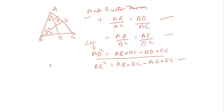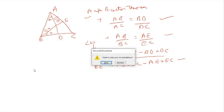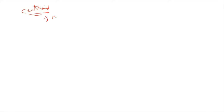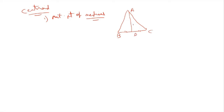Coming to the next important center — the centroid. The centroid is the meeting point of medians. A median is a line drawn from a vertex to the midpoint of the opposite side, so AD is a median on BC, meaning BD = DC. Draw all three medians and they meet at the centroid, typically represented by the letter G.